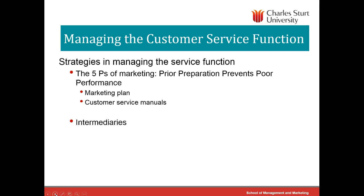Another strategy involves intermediaries — the idea that our services may often be delivered by other people. For example, if you're a mobile phone provider, you may be acting as an intermediary for someone who owns the network, likewise with the NBN. You might work on contractual arrangements to help control or manage customer service, or you might administer the channel. Administered channels are generally used by companies wanting to work with you because of your reputation, or you may have a corporate structure to manage services. In banking, we see brokers as administered channels, franchise operations as contractual, and corporate branch structures.